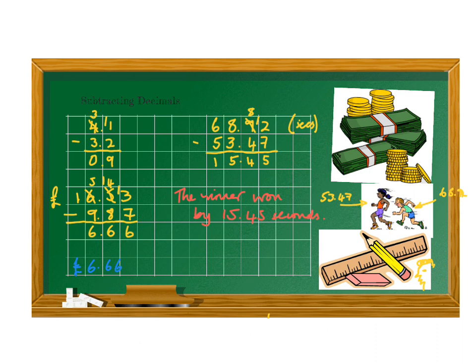Alright, and finally, let's say we're looking at 2 times in a race. So the first person finishes the race in 68.92 seconds. OK, I'm going to just put it there because I don't want to get in the way.